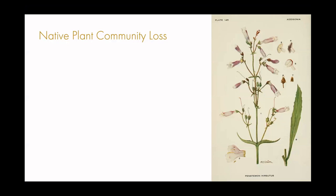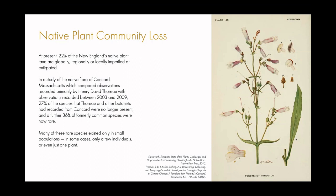We're also facing native plant community loss. At present, 22 percent of native plant species and groups in New England are either globally, regionally, or locally imperiled or extirpated. In a study done in Concord, Massachusetts, observations conducted by Henry David Thoreau and others in the mid-to-late 1800s and early 1900s were compared to floral observations conducted between 2003 and 2009. They found that 27 percent of the species recorded in the 19th century were no longer present, and another 36 percent that used to be common were now rare — many existing in only small populations, in some cases just a couple of plants.